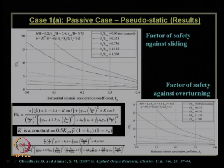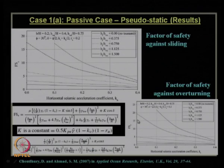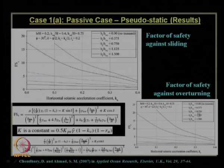A closed-form solution equation gives the factor of safety against sliding, which one can easily use to design the cross section of a retaining wall to withstand a certain seismicity coefficient and tsunami wave height. Similarly, for the factor of safety against overturning mode of failure, the closed-form solution is given, and the variation of that factor of safety with increasing k_h and increasing tsunami wave height is shown.